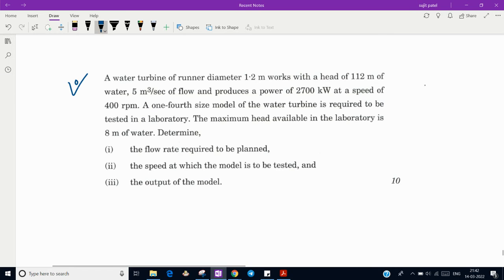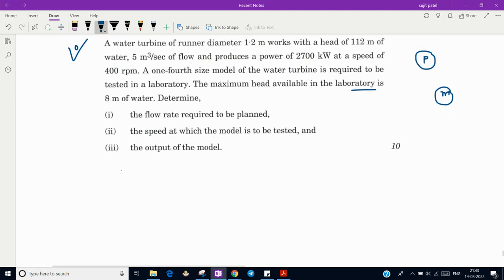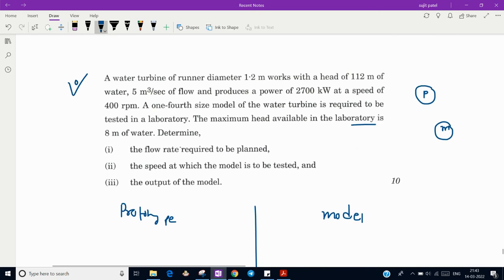First of all, before starting, wherever I write with suffix P, that will be for prototype, the actual working turbine. Wherever in suffix I write M, that is for model tested in laboratory. So here I am writing prototype and here model. Whatever data we have given, we will first write down here.